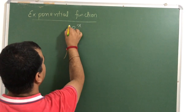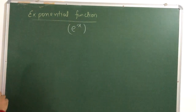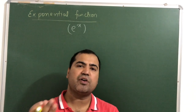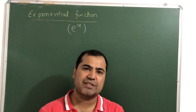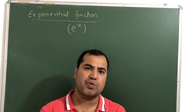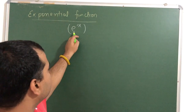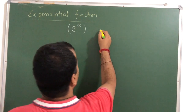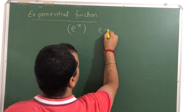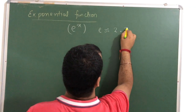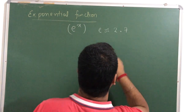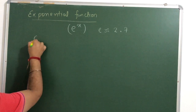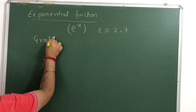I will define e raised to x as the exponential function. We can take any number with a variable power — 2 raised to x, 3 raised to x — but I am taking the classic example e raised to x. We know the value of e is approximately 2.7. First, we will discuss how the graph of the exponential function behaves.